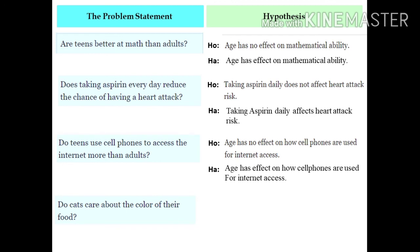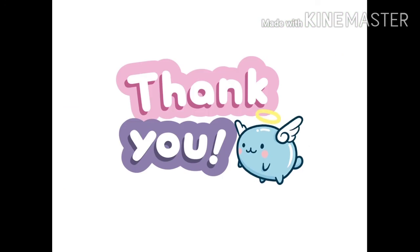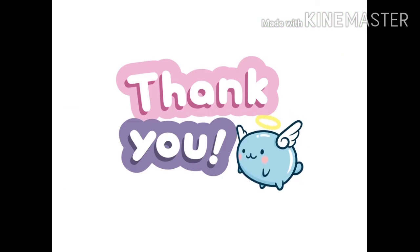And lastly, we can investigate: do cats care about the color of their food? We are talking about the preferences of cats towards the color of their food. The null hypothesis would be: cats express no food preference based on color. And the alternative hypothesis would be: cats express food preference based on color. So those are the two types of hypothesis — the null hypothesis and the alternative hypothesis. I hope you enjoy and learn from this video. Thank you so much.